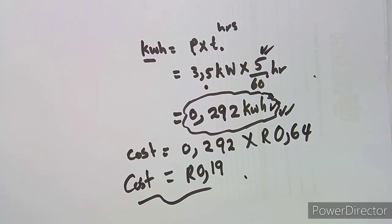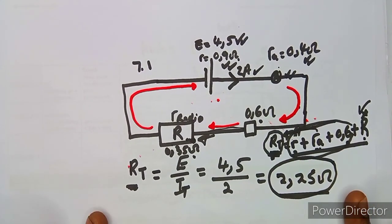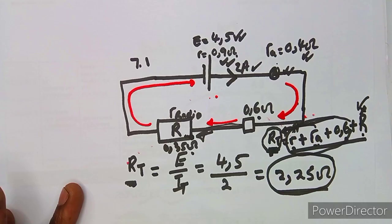These are the typical electricity questions for Engineering Science Grade 3. They can ask about costs, heating elements, or any electrical appliance. The best approach when answering these questions is to draw a diagram — that is one of the most important basics. That's it from us at African Motives — till we meet again.